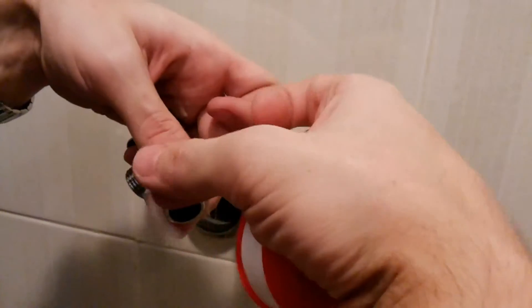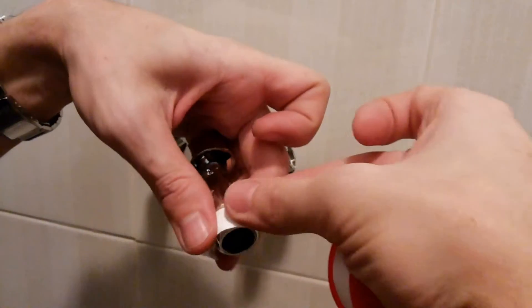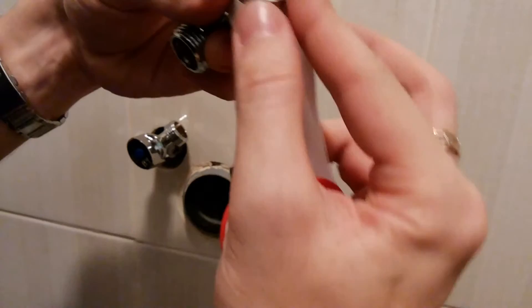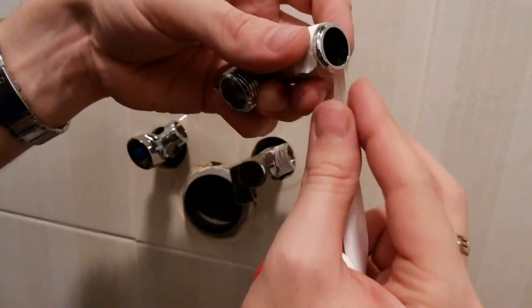Now teflon in the same direction. Keep tension on the tape so that it is pulled into the thread. Make it tight and nice looking.